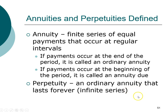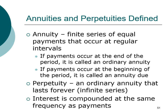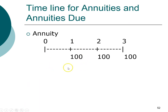A perpetuity is just an ordinary annuity that lasts forever — a very special form. One important thing to keep in mind about annuities and perpetuities is that compound interest should be compounded at the same frequency as payments. In other words, if it is a monthly annuity where cash flows occur monthly, then the interest rate should also be computed on a monthly basis.